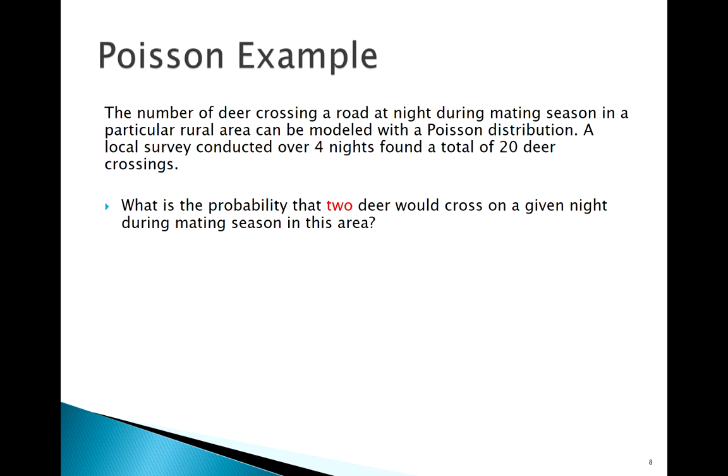The first question we might want to answer here: what's the probability two deer would cross on a given night? We expect five, but it's possible that we only got two one night. Plugging into our formula, the probability of seeing two is eight percent.